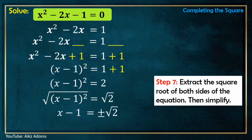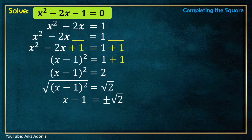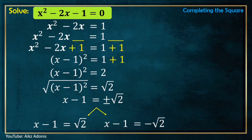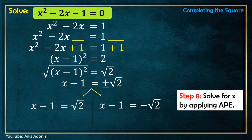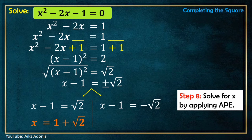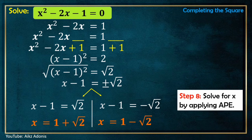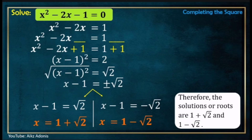Now let's split x - 1 = ±√2 into two equations: x - 1 = √2 and x - 1 = -√2. Step 8: Solve for x using transposition. For the first equation, transpose -1 to get x = 1 + √2. For the second equation, transpose -1 to get x = 1 - √2. Therefore, the solutions or roots of the quadratic equation are 1 + √2 and 1 - √2.